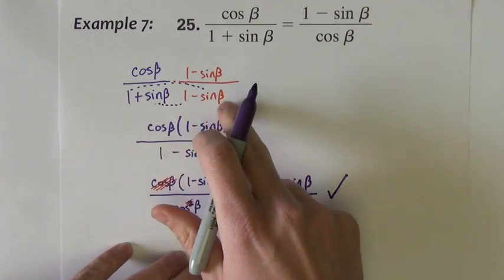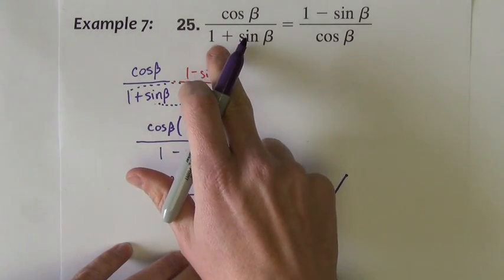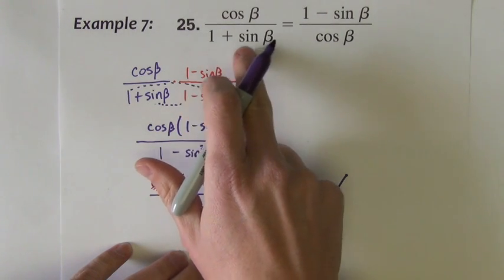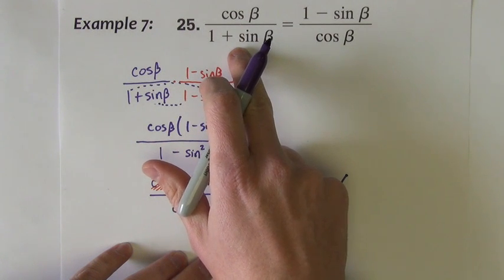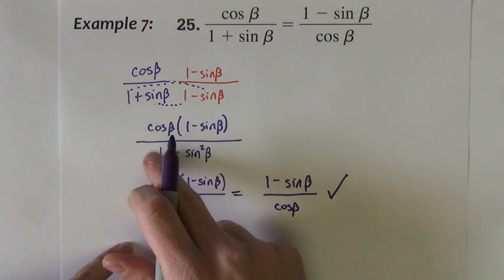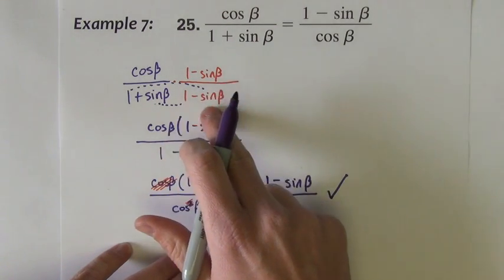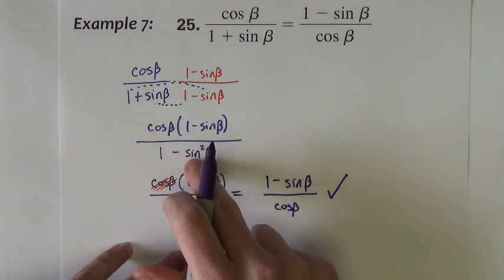I use this rationalizing technique often times when I see a denominator that is a binomial, a denominator that has two terms, and they're not squares. If they're both squares like they were after I foiled, well then that leads to a Pythagorean identity. So doing this rationalizing step creates that Pythagorean identity for me.